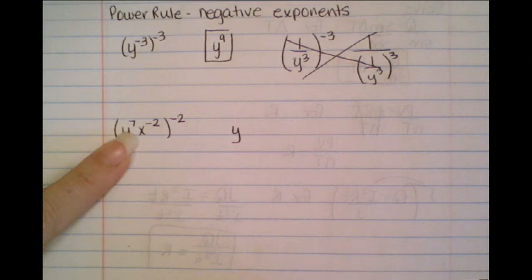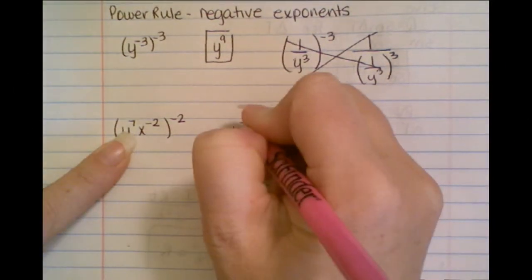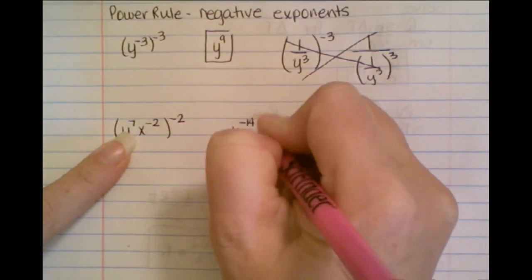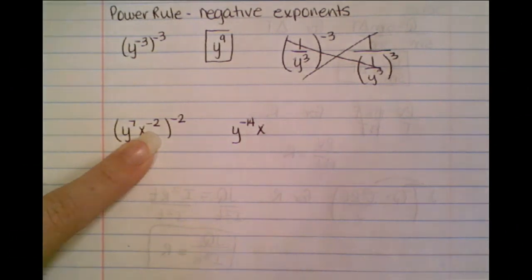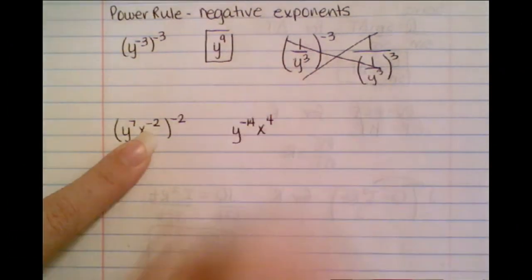Well, 7 times negative 2 is negative 14, and x times negative 2 times negative 2 is a positive 4.